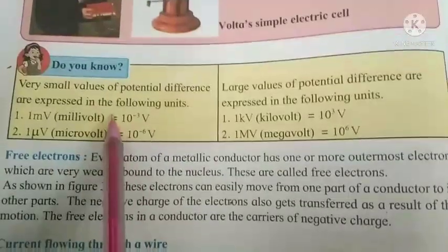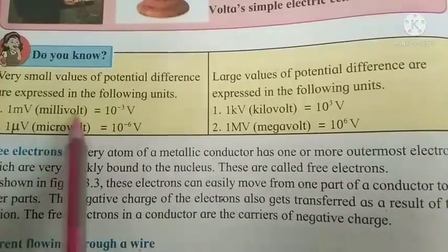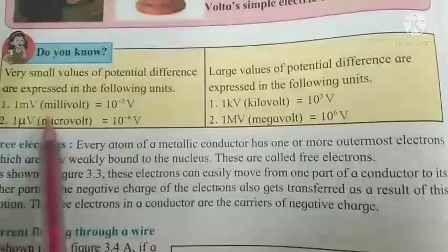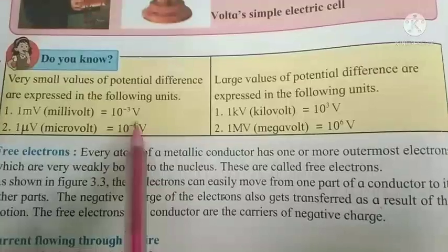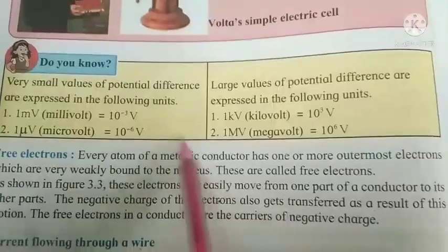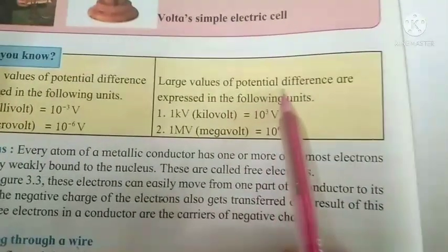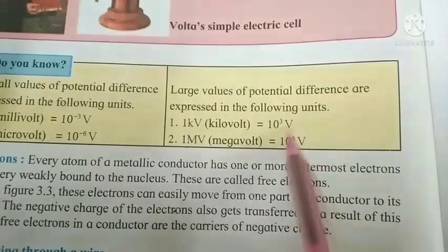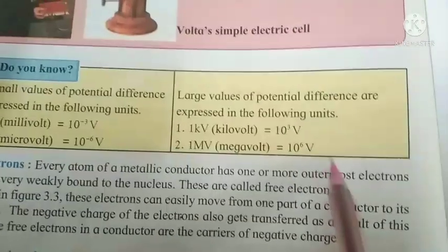Small values of potential difference are expressed in units: one millivolt equals 10 raised to minus 3 volts, and one microvolt is equal to 10 raised to minus 6 volts. Large values: one kilovolt equals 10 raised to 3 volts, and one megavolt is equal to 10 raised to 6 volts.